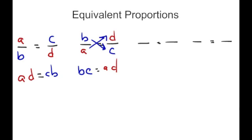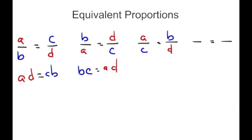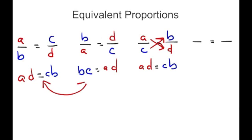By the commutative property, we can say the products differently, but these two things are still equivalent. You can also flip it another way: taking B and C and swapping them gives A over C equals B over D, but the cross products still remain A times D equals B times C. So these proportions are still equivalent — they just look a little different.